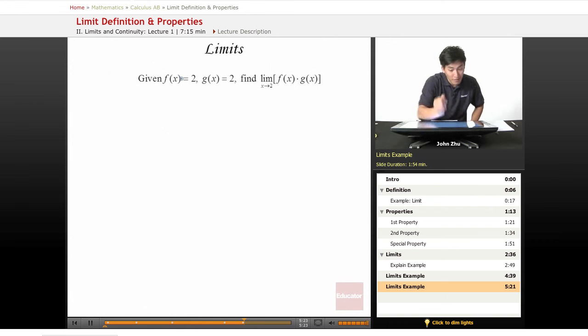For the next example, given f(x) equals 2, g(x) equals 2, find the limit as x approaches 2 of the two functions multiplied together. So we know by a property limit of x to 2, f(x) times g(x)